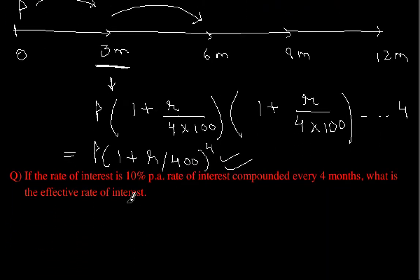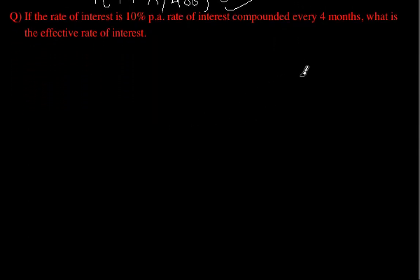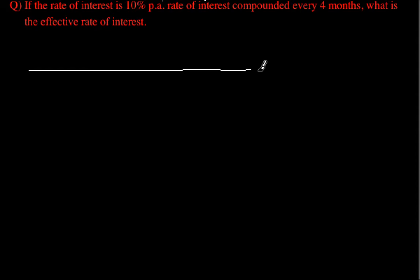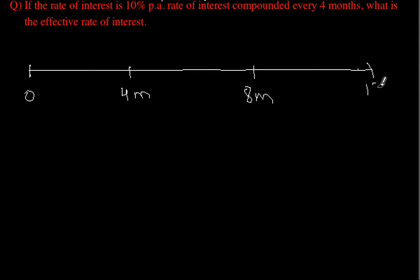Now we will look at another example to discuss the difference between the nominal rate of interest and the effective rate of interest. We are given: the rate of interest is 10% per annum, compounded every 4 months. We need to find the effective rate of interest. Drawing a number line: compounding is done at 4 months, 8 months, and 12 months — so compounding happens 3 times.